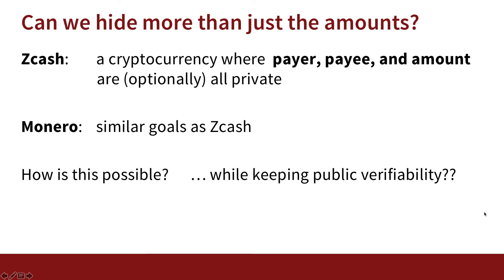It turns out we can hide even more. In fact, there are blockchains — for example, Zcash — where not only are the amounts hidden, but everything is hidden: the identity of the payer, the identity of the payee, all of it. So when Stanford pays my salary, if they choose to use Zcash, people will not even know that Stanford is paying my salary. Similarly, when Ford buys its tires from its supplier, if they use Zcash, nobody will even know who the supplier is, because everything is hidden on the blockchain.